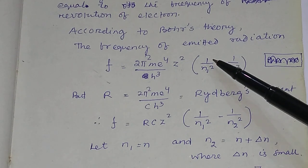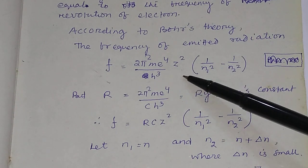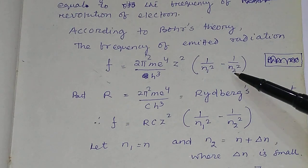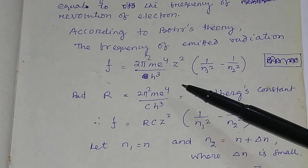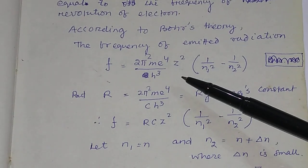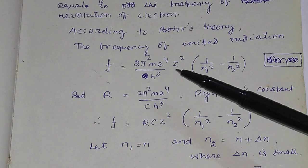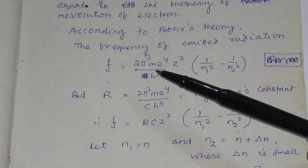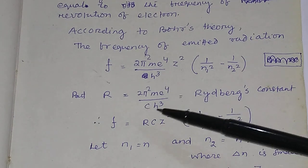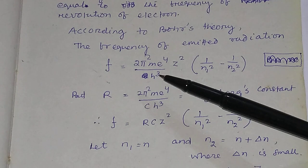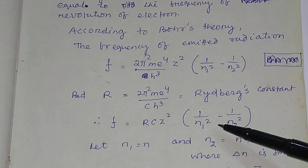According to Bohr's theory, the frequency of emitted radiation in CGS units is F = (2π²Me⁴Z²) / H³ × (1/N₁² − 1/N₂²). In SI units, multiply by 1/(4πε₀). The factor 2π²Me⁴ / (cH³) is the Rydberg constant R, so in terms of R, the frequency is F = RcZ² × (1/N₁² − 1/N₂²).